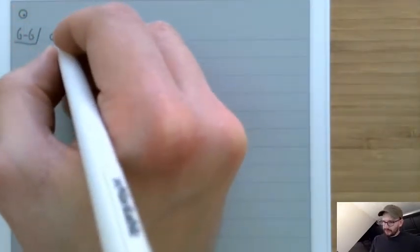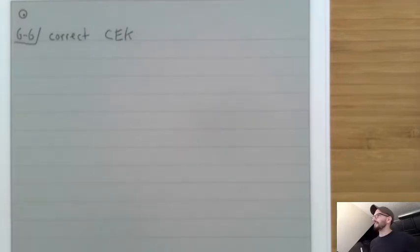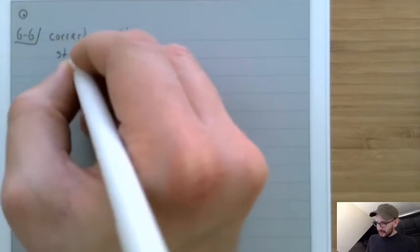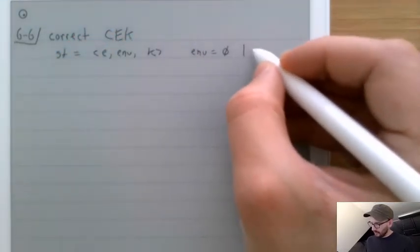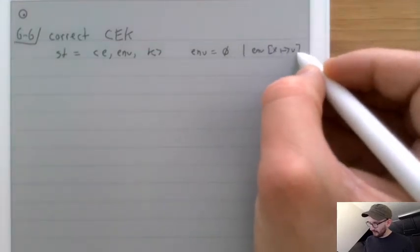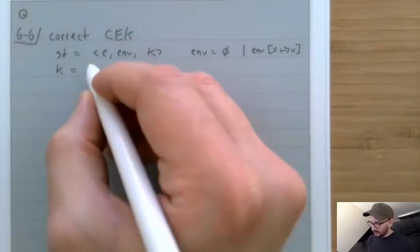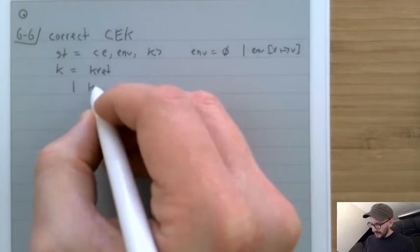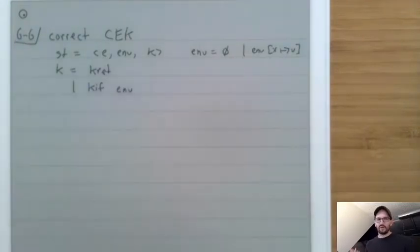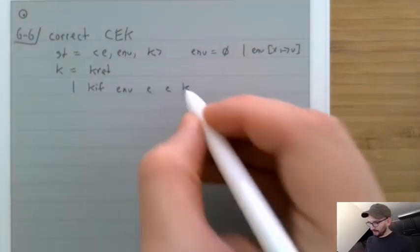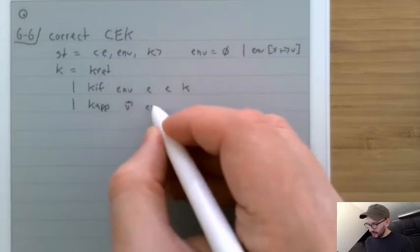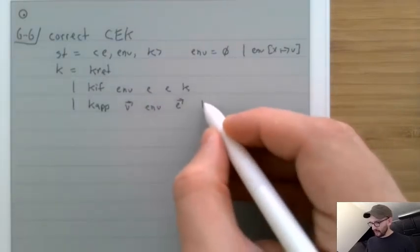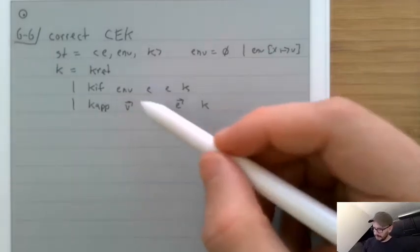The core problem is that substitution happens on program source code, and we need to remember all the substitutions that would have happened on a component by the time we reach it. When we store ET and EF for later in KIF, we don't keep track of what substitutions should have happened. Here is the correct version of the CEK machine.